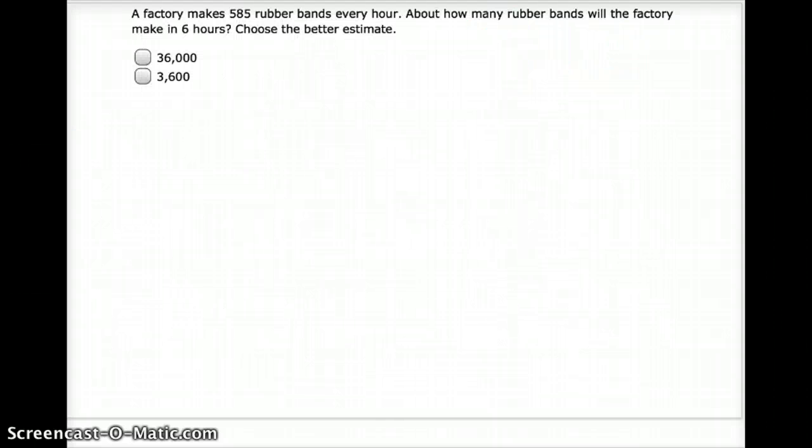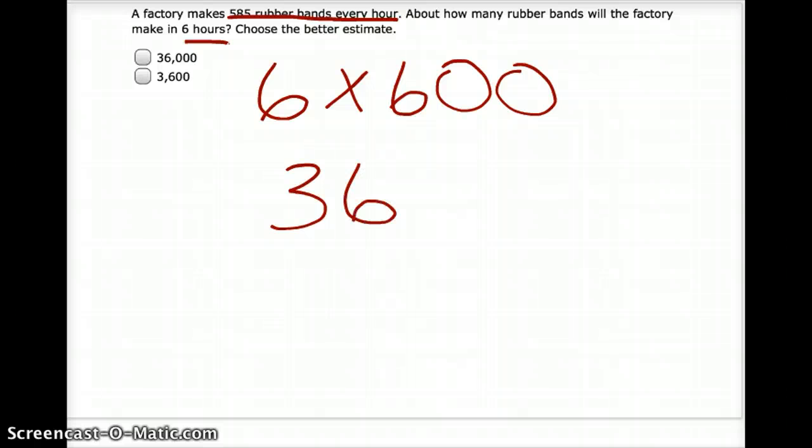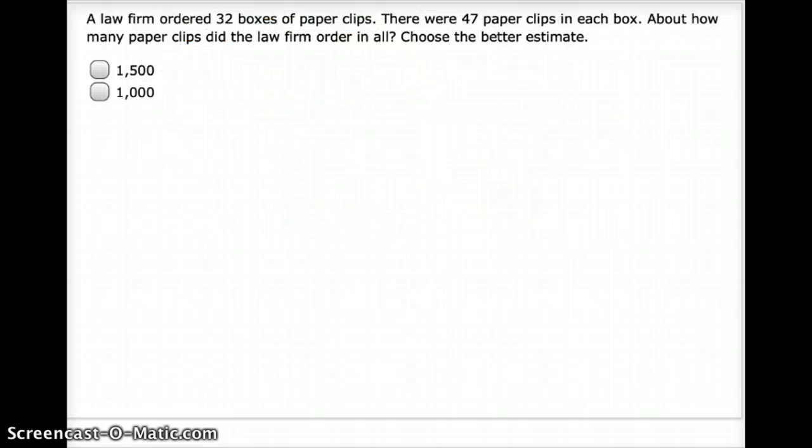Let's look at this one together. A factory makes 585 rubber bands every hour. About how many rubber bands will the factory make in six hours? So I've got 585 rubber bands every hour and I want to know how many in six hours. Remember, you're going to leave the six the same, and I want to take 585 to a fact that's easy, so I'm going to take that to 600. 6 times 6 is 36, and I've got two zeros. Anything times zero gives me a zero, so I'm going to have at least two zeros in my answer. The answer is 3,600.